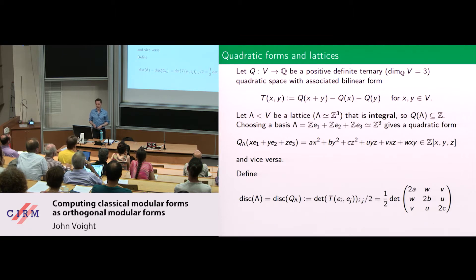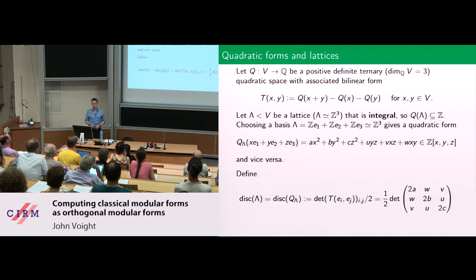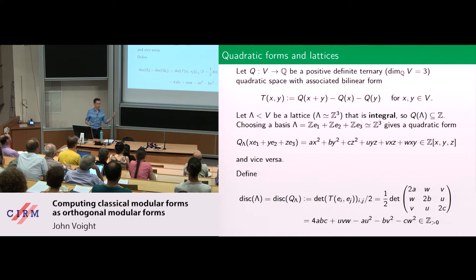There are a few quantities associated with such a lattice. We define its discriminant — which is also the discriminant of the ternary quadratic form — to be the determinant of the Gram matrix divided by two. The reason to divide by two is because otherwise you would see a polynomial in A, B, C, U, V, W where all coefficients were divisible by two. This is sometimes called the half-discriminant — it's just an extra factor of two that doesn't belong there.